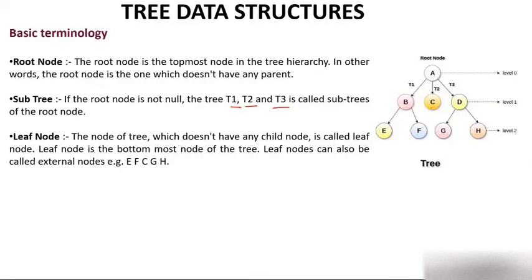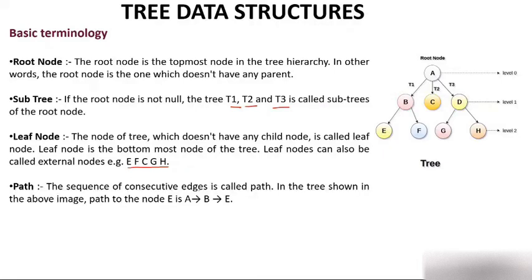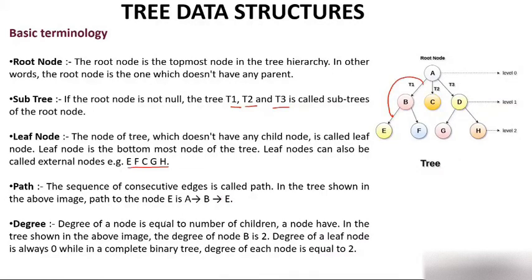Nodes which have children — like B, D, and A — are called internal nodes. Path: the sequence of consecutive edges is called a path. For example, the path to node E is A → B → E. Degree: the degree of a node equals the number of children. Root node has degree 3 because it has 3 children. Degree of node B is 2. Degree of a leaf node is always 0, since it has no children.